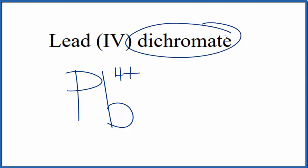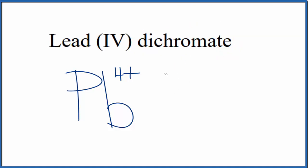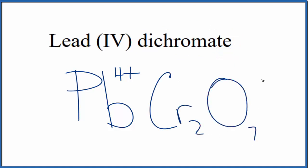The dichromate ion — when you see 'ate,' that means it's a polyatomic ion. You won't find this on the periodic table. So you either memorize that the dichromate ion is Cr2O7 with a 2- ionic charge, or, if you're allowed, you look it up on a table of polyatomic ions.